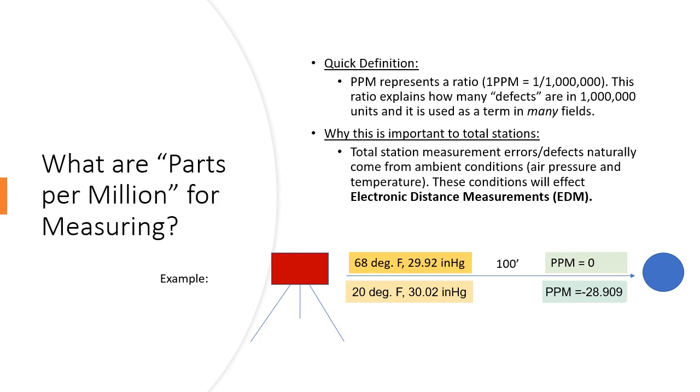Now if I don't type this into the tablet, all that means is that even though I'm measuring 100 feet, the distance that comes back to me on my tablet is going to be wrong unless I compensate for that error. And let me show you how I would calculate what that error would be.